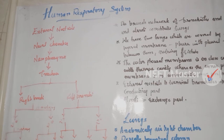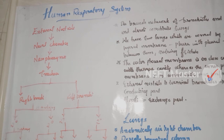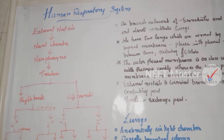Now we will learn about the human respiratory system. We have a pair of external nostrils opening above the upper lip. These lead to the nasal chamber and then to the nasal passage. The nasopharynx is a common passage for both food and air.